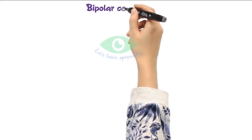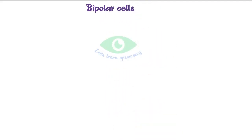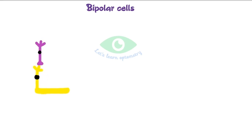Bipolar cells: 13 types have been identified. They are responsible for chromatic composition, polarity, and contrast sensitivity. The axons of bipolar cells connect with the dendrites of ganglion cells, and the dendrites of bipolar cells connect with the axons of the photoreceptors.